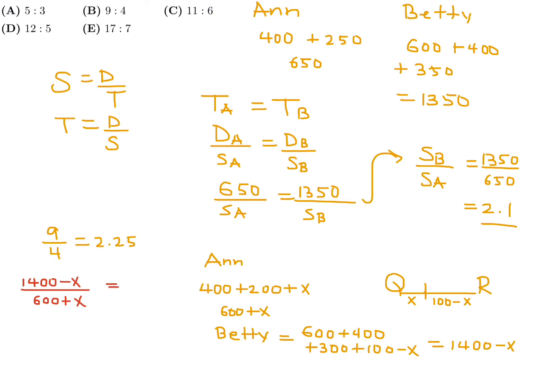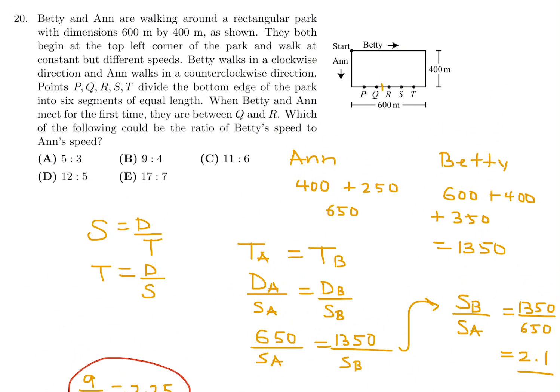And let's see if this 9 over 4 actually gives us a value of X that makes sense. Cross multiply and you get 5400 plus 9X, and that other side would be 5600 minus 4X. So that means 13X is equal to 200, and therefore X is equal to 15.4. That makes sense! So basically it's 15.4, and then on the other side it would be about 84.6. So it makes perfect sense, and when they meet at that exact point, the ratio will indeed be 9 over 4. So we've proven it, and therefore number 20, the answer is B.